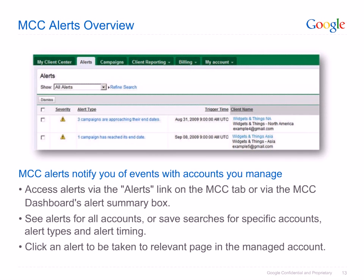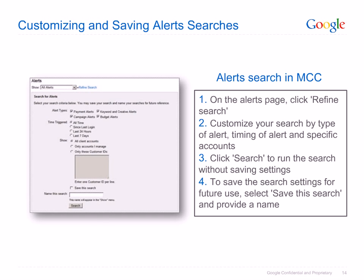In order to take action on an alert, just click on it and you'll be taken to the most relevant page in the managed account. To run and save searches for MCC alerts: on the alerts page, click the link Refine Search to reveal available search options. Customize your search by type of alert — payments alerts, campaign alerts, keywords and creative alerts, and budget alerts — by timing of alert from the Time Triggered menu, and by accounts you want to search: all accounts, only accounts you directly manage, or individual accounts. Click the Search button to run the search without saving the settings. To save these search settings for future use, check the box to save this search and give your search a name. You can save up to 200 searches. Once saved, you can run this same search again by choosing its name from the menu at the top of the search page.